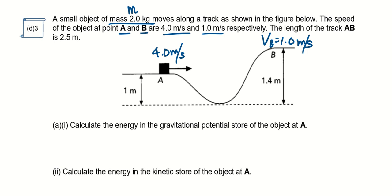So the speed here is 1 meter per second, so maybe I call this vB and I call this vA. The length of the track AB is 2.5 meters, that means from A all the way down and up the length is 2.5 meters.